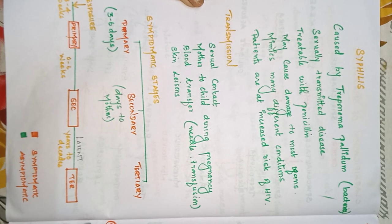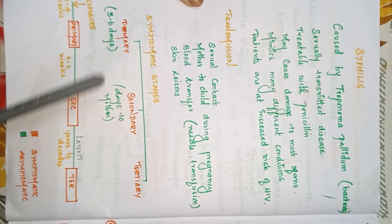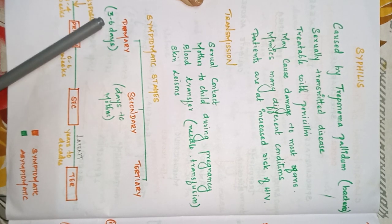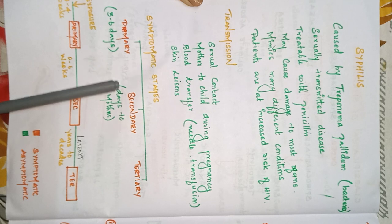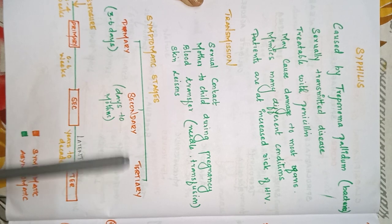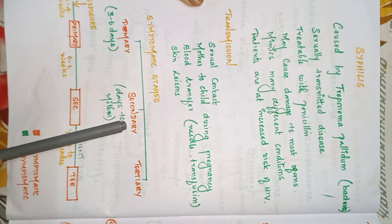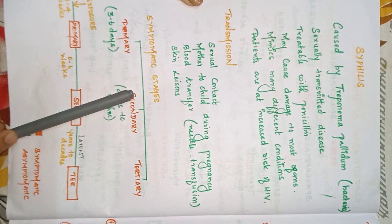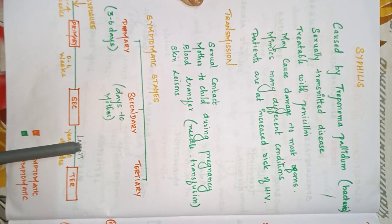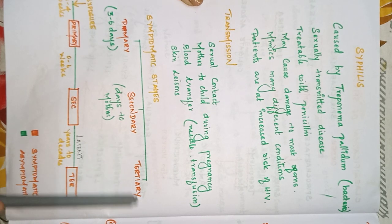There are three symptomatic stages of syphilis: primary, secondary, and tertiary. The primary stage lasts three to six days with no symptoms. The secondary stage involves symptom onset lasting days to months. Between secondary and tertiary there is a latent period with no symptoms, after which the patient moves to the chronic tertiary stage.